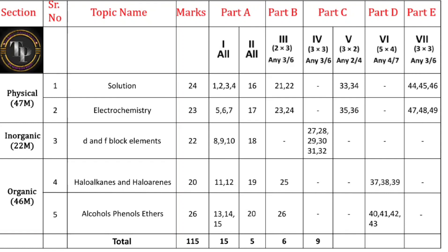Part D entirely belongs to organic chemistry — seven questions given, answer four. Five into four gives 20 marks. Part E belongs to numerical problems from physical chemistry only: three questions from Solution and three from Electrochemistry. Out of six you answer three, giving 9 marks. Total: 15 plus 5 plus 6 plus 9 plus 6 plus 20 plus 9 equals 70 marks. Out of a 115-mark question paper you answer for 70 marks — choices are available. All the best, thanks for watching!